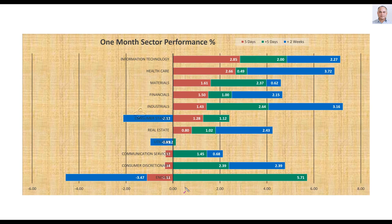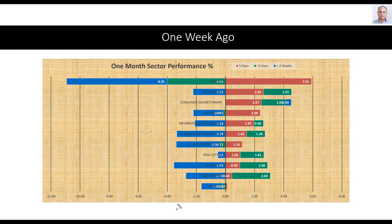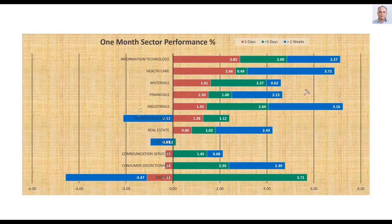Market level was bullish. Sector level is also bullish — more reason to look for bullish trades. Let me spend some time on the energy sector. This week, energy sector is down and it is the worst performer. How was it one week ago? Energy sector was up and it was the best performer by far. One week ago it was the best performer; this week energy is the worst performer, down by a smaller percentage.